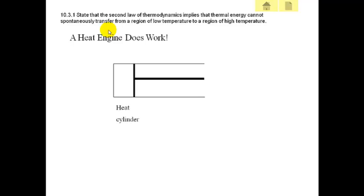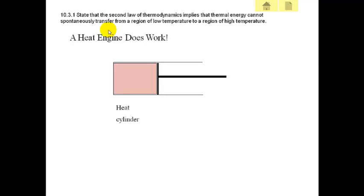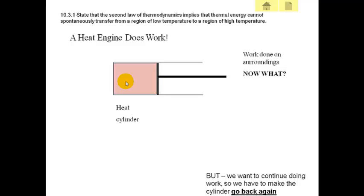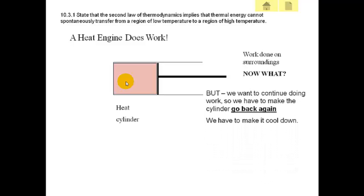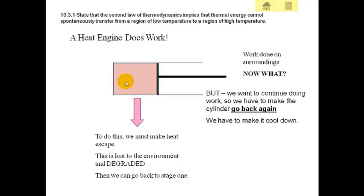A heat engine: if we heat a cylinder it expands, does work on the surroundings — a machine that changes heat into work. But this can't go on forever; the cylinder has a certain size. To keep doing work, it must go back again. To make the cylinder contract, we have to cool it. We cool it to return it to its original position. We take heat from it, and throw that heat out as quickly as possible to a cold reservoir, which withdraws the heat and discards it, so we can return to stage one and keep doing work.